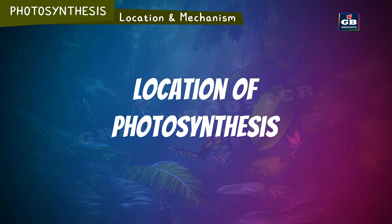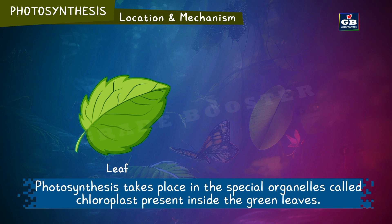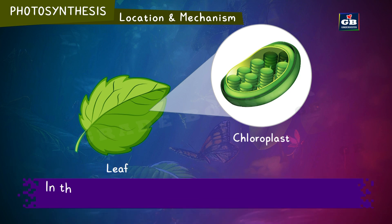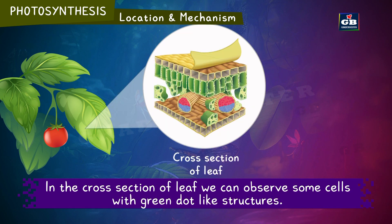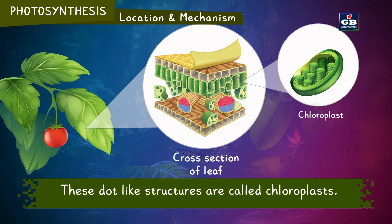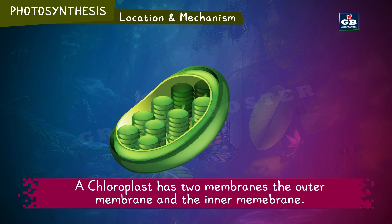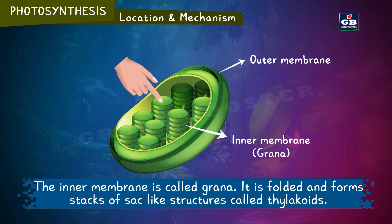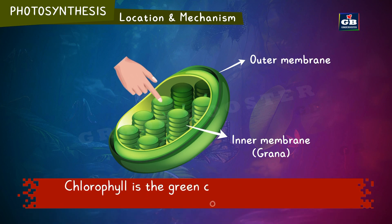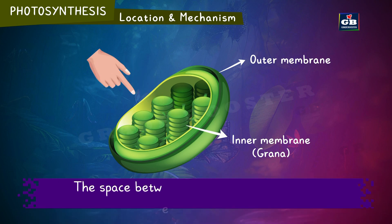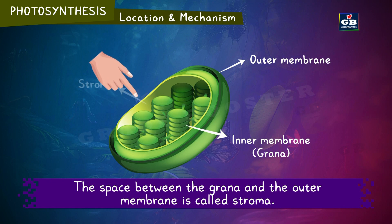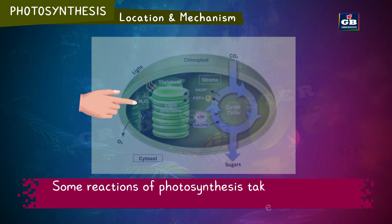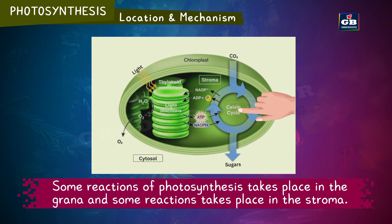Location and mechanism of photosynthesis: Photosynthesis takes place in special organelles called chloroplasts present inside the green leaves. In the cross section of a leaf, we can observe cells with green dot-like structures — these are the chloroplasts. A chloroplast has two membranes: the outer membrane and the inner membrane. The inner membrane is called grana, which is folded and forms stacks of sac-like structures called thylakoids. Chlorophyll is the green pigment present in these thylakoids. The space between the grana and the outer membrane is called stroma. Some reactions of photosynthesis take place in the grana and some in the stroma.